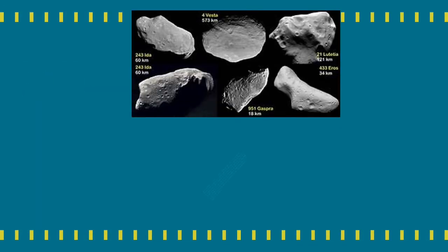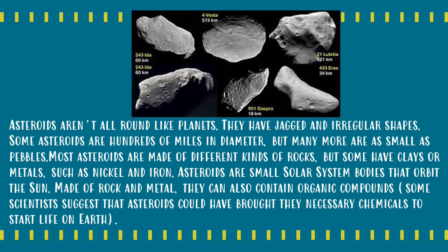Asteroids. Asteroids aren't all round like planets — they have jagged and irregular shapes. Some asteroids are hundreds of miles in diameter, but many more are as small as pebbles. Most asteroids are made of different kinds of rocks, but some have clays or metals such as nickel and iron. Asteroids are small solar system bodies that orbit the Sun, made of rock and metal. They can also contain organic compounds. Some scientists suggest that asteroids could have brought the necessary chemicals to start life on Earth.